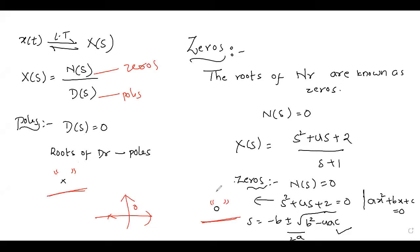So let us start with the basic standard type of input signals — how to find the Laplace transform using the standard basic formula: the integral of x of t times e to the power minus st dt. Now let us start with the standard signal, the unit impulse function.